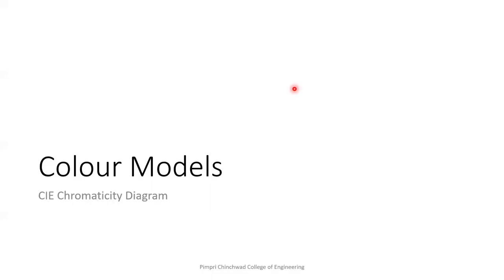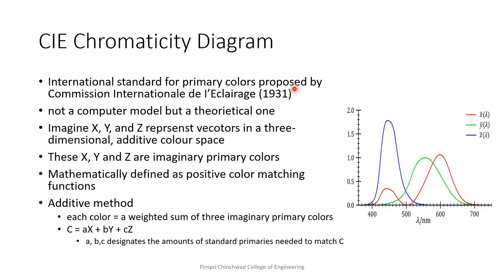Hello students, welcome you back after the break. In this video, we will be learning about the chromaticity diagram proposed by CIE. CIE chromaticity diagram is an international standard for primary colors proposed by Commission Internationale de l'Eclairage or the International Commission of Illumination. This was proposed in 1931, so you can understand that this is not a model specific for computers, but a theoretical one.